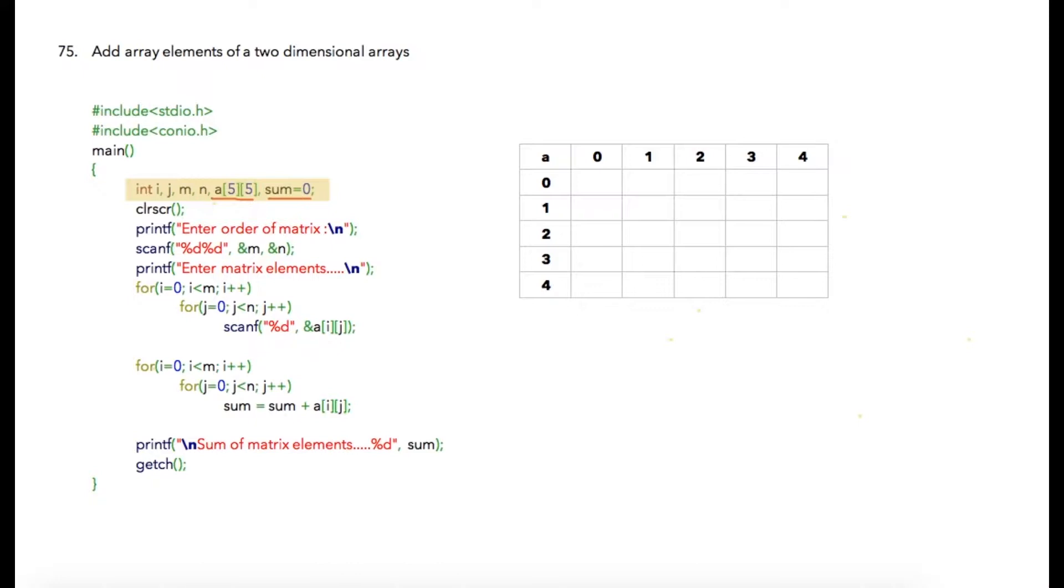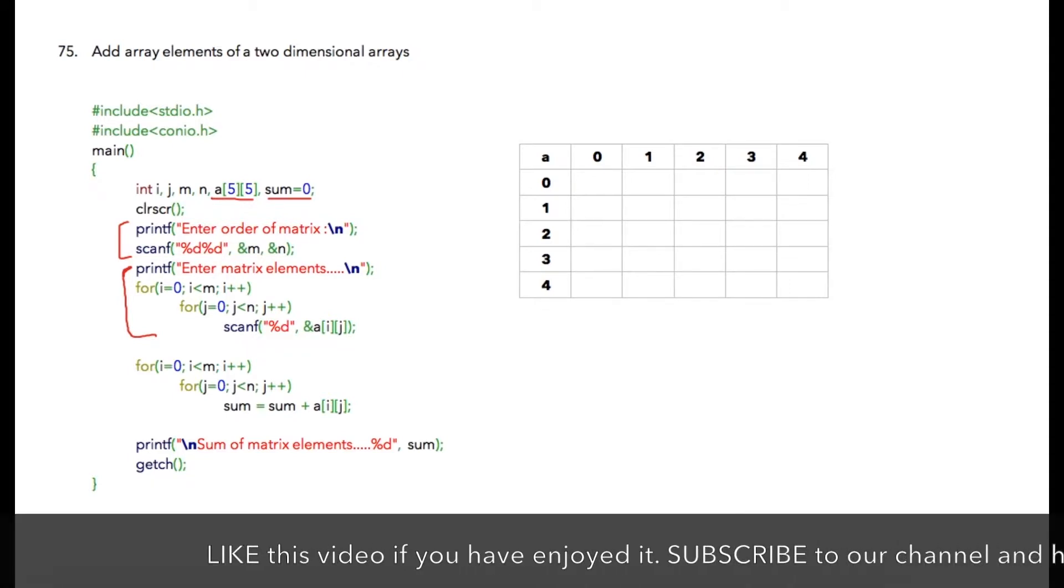We are going to perform a similar operation. We are going to accept m by n matrix size from the user and we are going to ask user to enter all matrix elements. Once that is done we just need to add all the matrix elements. Suppose user has entered three by three matrices, then all of these values we need to consider for addition.